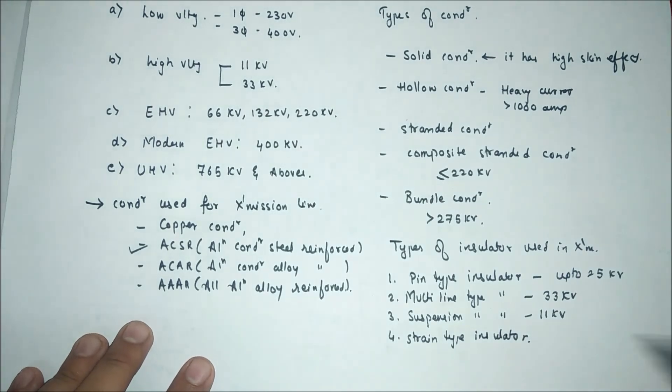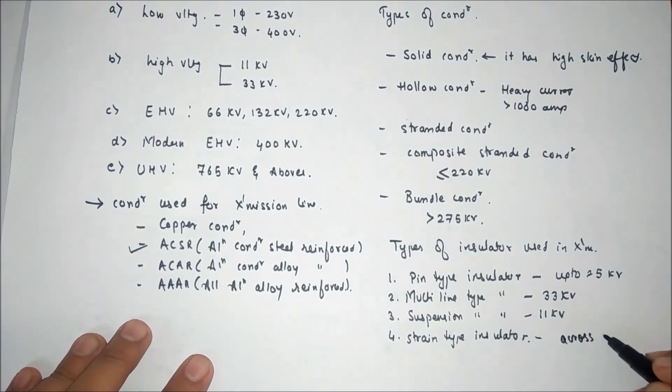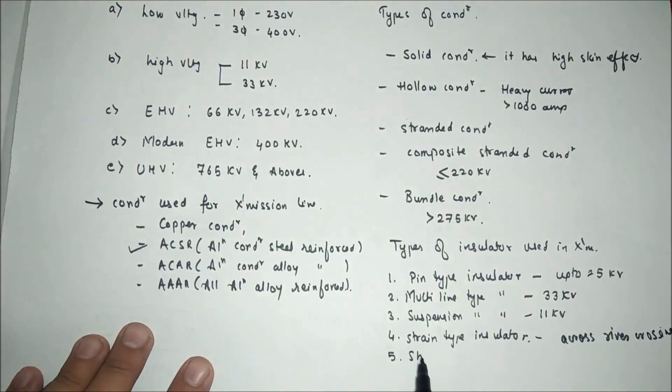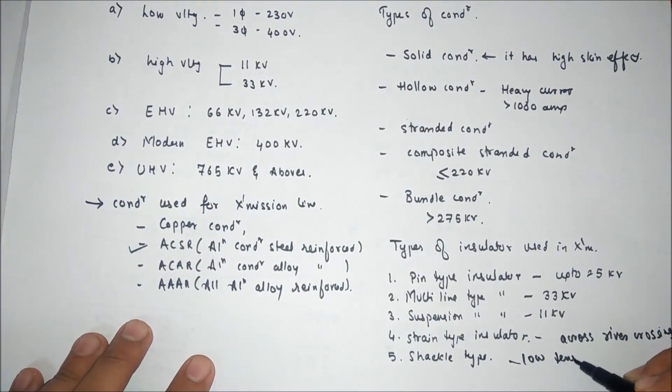This type of insulator is very mechanically strong and it is used across river crossing. And last one is shackle type. This type of insulator is used in low tension cable which is operated horizontally and vertically.